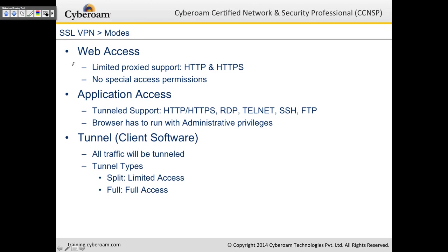There are three modes of access in SSL VPN in CyberROM. The first is web access, which offers limited proxy support for HTTP and HTTPS. You can publish web bookmarks — your SAP server, office intranet — which can only be accessed via browser from your corporate office normally. When roaming, you can access inventory or your SAP server UI through web access. No special access permissions are required in web access mode. The second is application access mode, with tunnel support for HTTP, HTTPS, RDP, Telnet, SSH, and FTP — all accessible right from your browser.